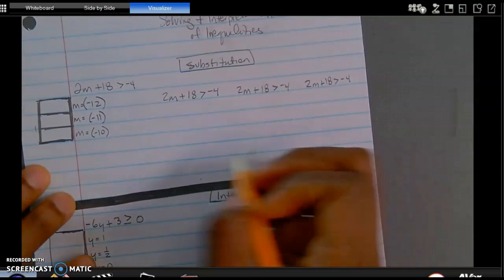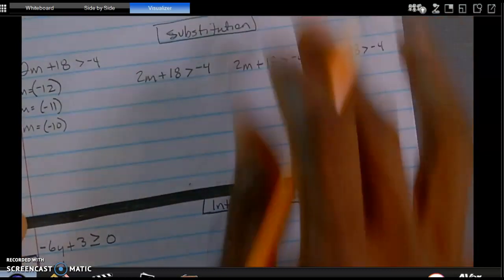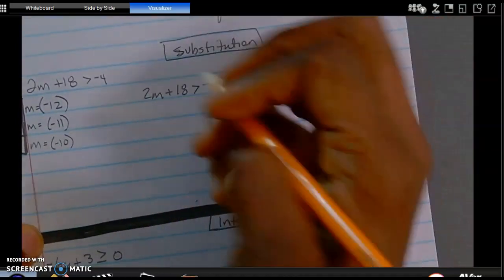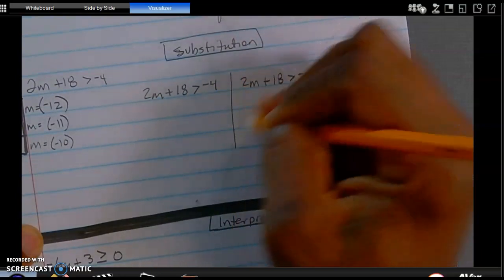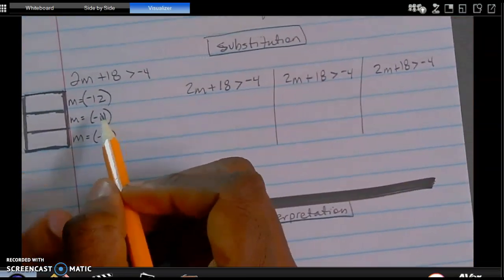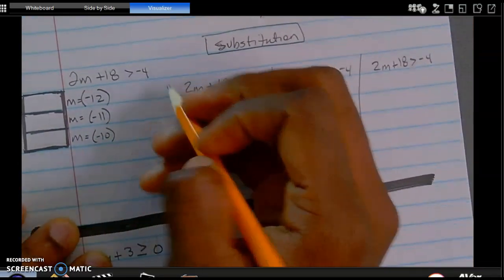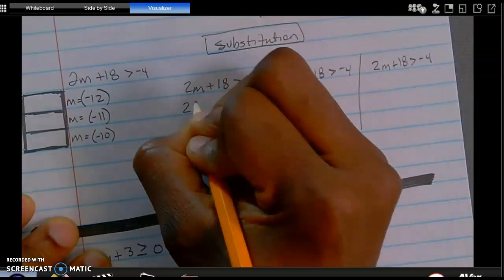And the goal is for me to see whether or not these possible solutions will make this inequality true. So substitution means that instead of this variable, and we are not scared of letters in my class, this variable simply means that it's an unknown number that I do not know the value of just yet. I'm supplied a few different values, so that's what I'm going to substitute or plug in for the unknowns.